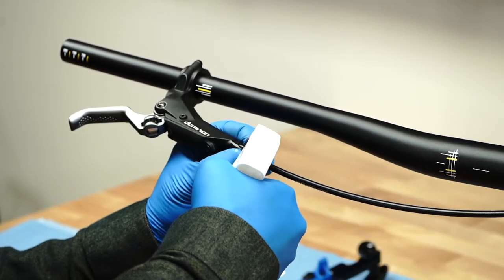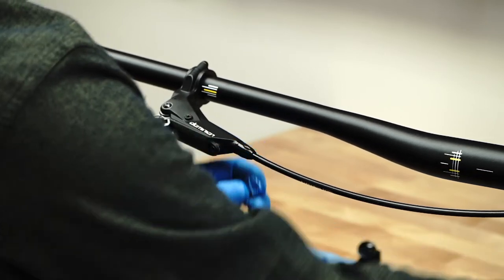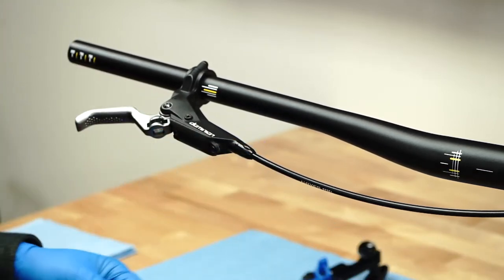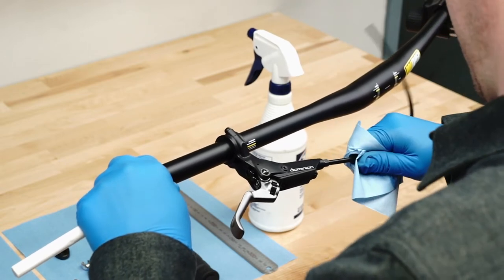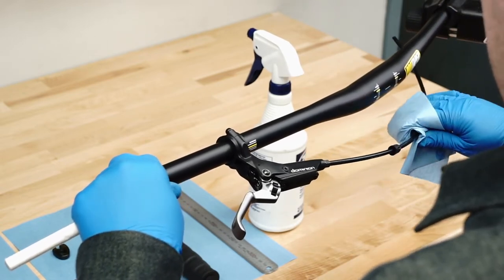Pull the nose cone away from the master cylinder, revealing the compression nut. You may find it helpful to lubricate the hose with isopropyl alcohol to move the nose cone.